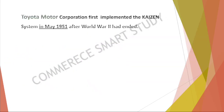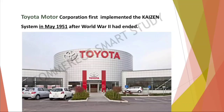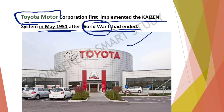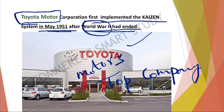The first company to implement the Kaizen system was Toyota Motors Corporation. Toyota implemented the Kaizen system in May 1951, after World War Two. After the war, Japan had suffered great losses, but by following Kaizen and making small continuous improvements, Toyota became one of the top companies in the world.